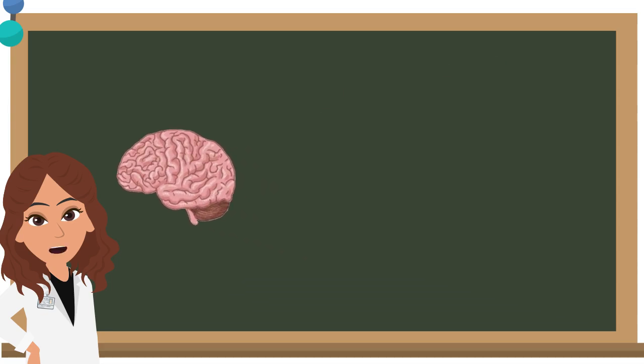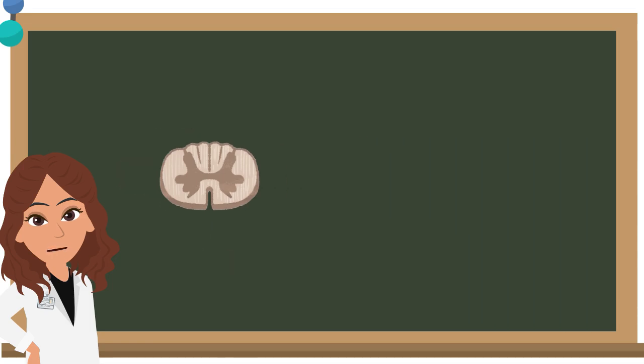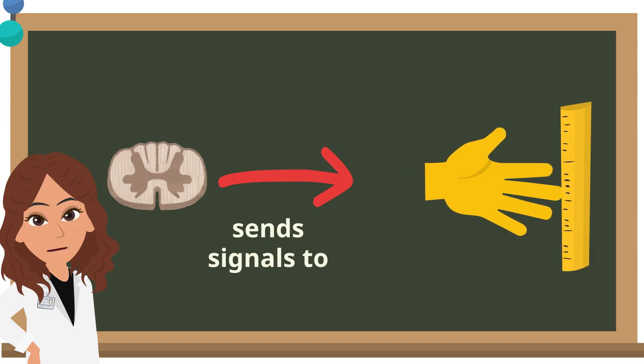Then, the brain processes the information and sends signals to the spinal cord. Lastly, the spinal cord sends signals through the motor nerves to the muscles in the hand, causing the hand to move to catch the ruler.